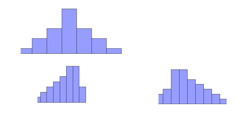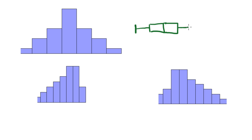Shape works the same way no matter which graphical representation you're using. Ultimately we have a list of data points and we choose to draw a histogram, a stem and leaf plot, a box plot, a dot plot, or any of these. The shape is still going to be the same no matter how we visually represent it. So you can say symmetrical, positively skewed, or negatively skewed based on any of these diagrams.